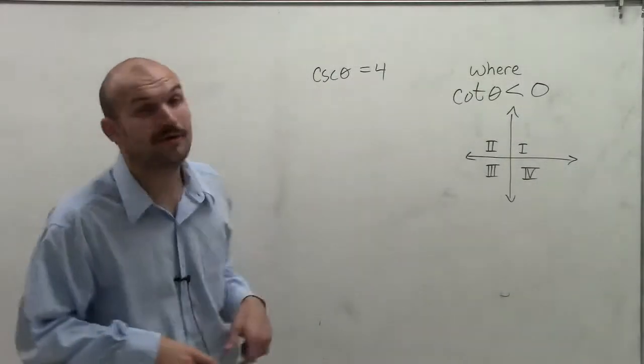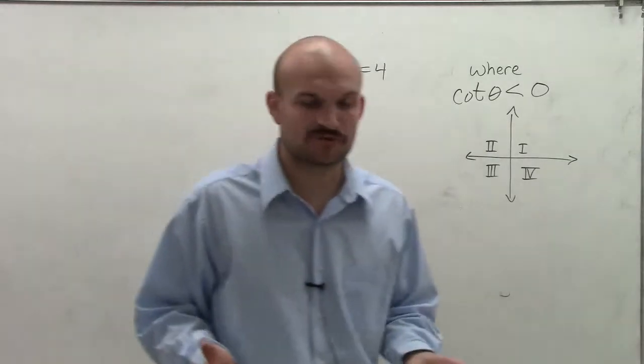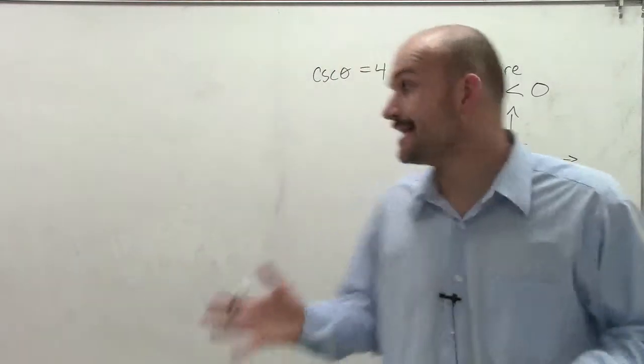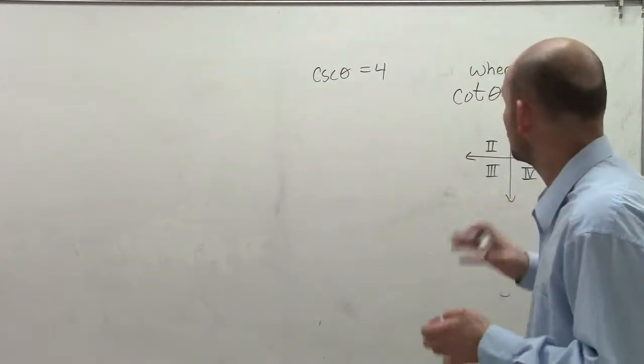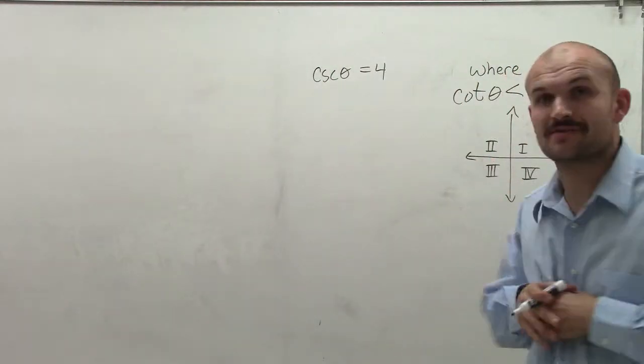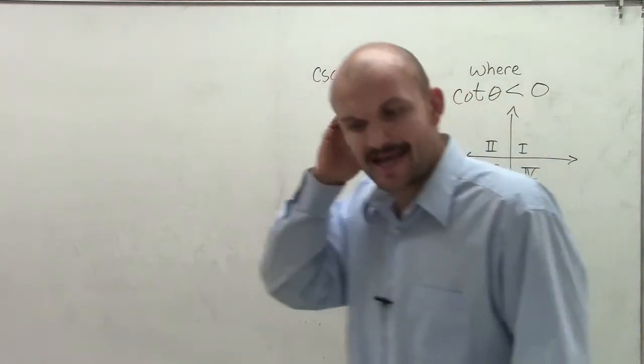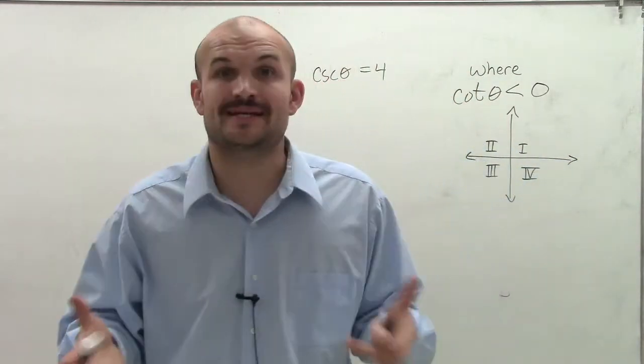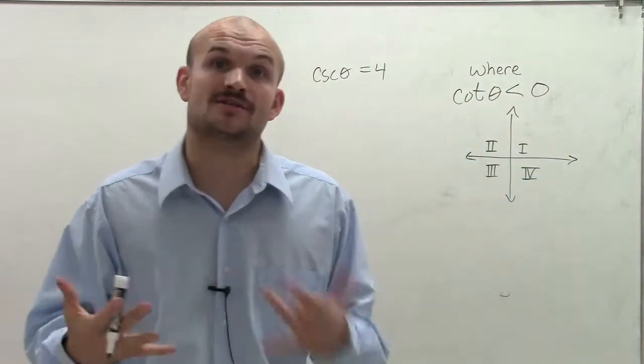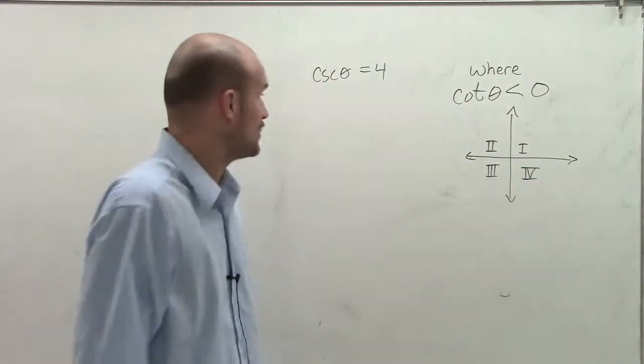Welcome. So I have cosecant of theta equals 4, and I also have a constraint where the cotangent of theta is less than 0. What we need to do is evaluate all six trigonometric functions.